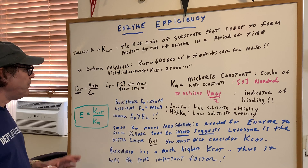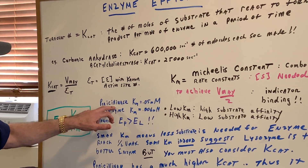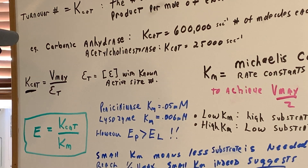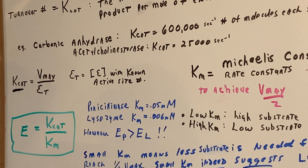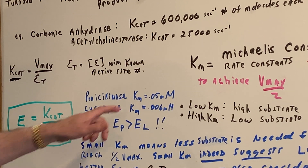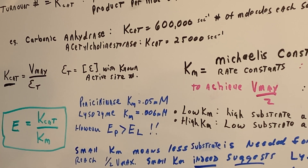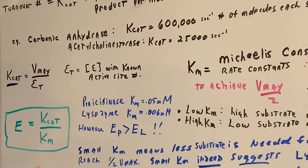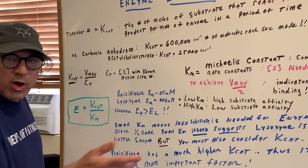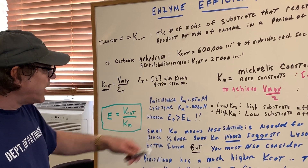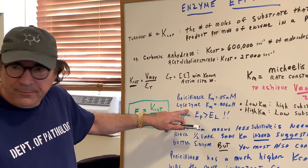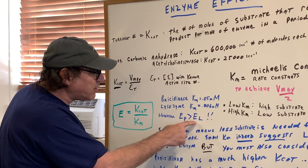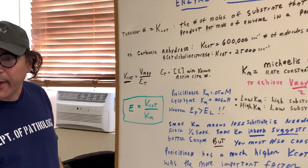Let's do an example — this was actually one of my old exam questions. Penicillinase has a KM of 0.5 millimolar, and lysozyme has a KM of 0.06 millimolar. When you first look at this, you would say you only need a small amount of lysozyme to get the desired effect, and this would be the more efficient enzyme. However, it turns out that the efficiency of penicillinase is actually greater than the efficiency of lysozyme.